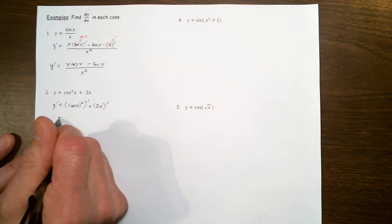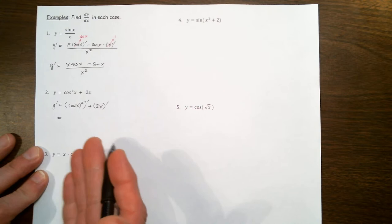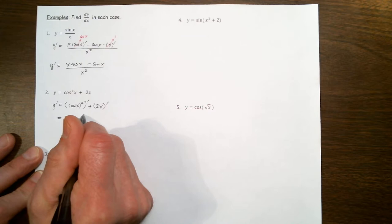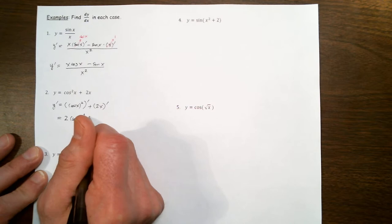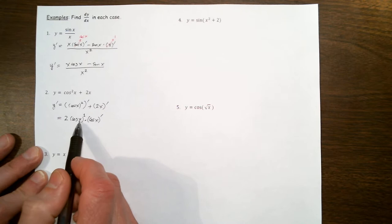The first derivative is the derivative of a function of x raised to a power, so that's our generalized power rule, which is a consequence of the chain rule. We take the power, multiply it by the base function to the original power minus 1 — so 2 minus 1 is just 1 — and then follow up by multiplying by the derivative of the base function. So the derivative of cosine squared of x would be 2 cosine of x times the derivative of cosine of x.